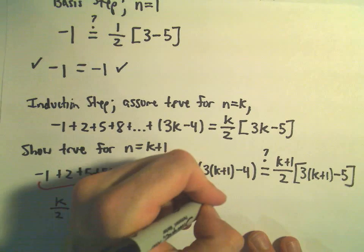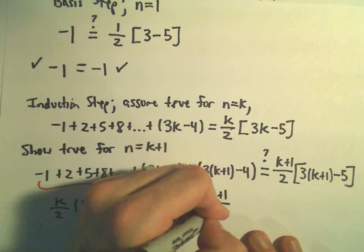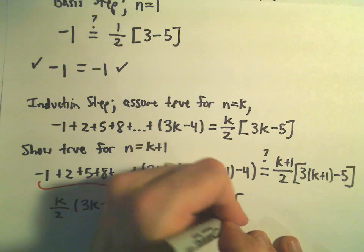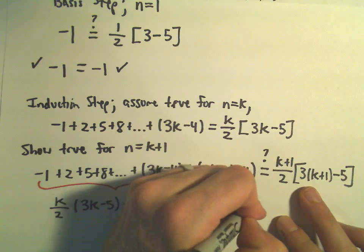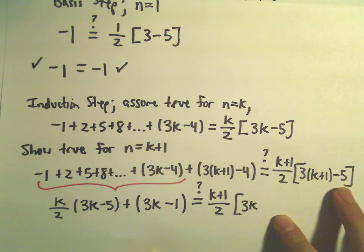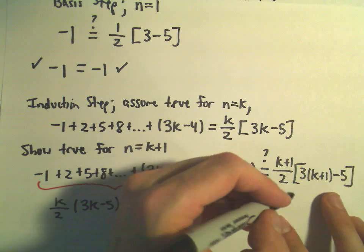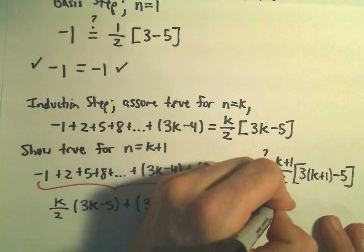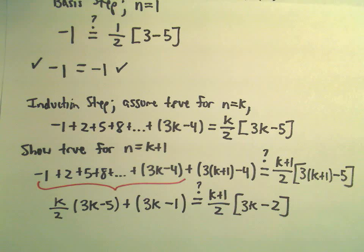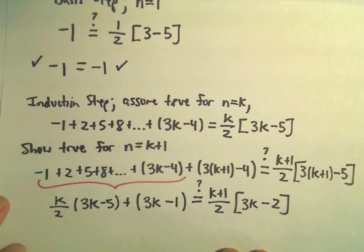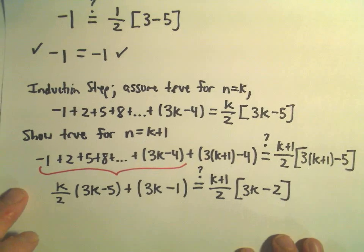And again, I'm asking myself, is that equal to k plus 1 over 2? Looks like we'll have 3k plus 3 minus 5, so 3 minus 5 will give us negative 2. And again, just kind of asking ourselves again, are these quantities in fact equal?